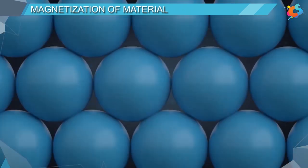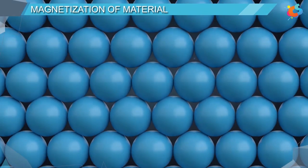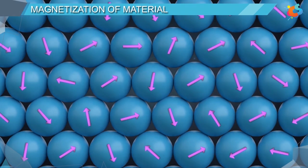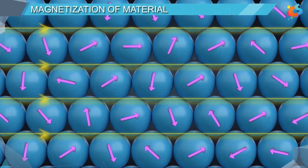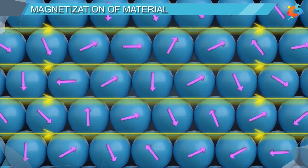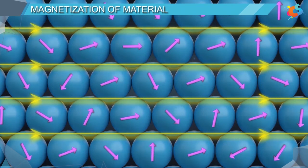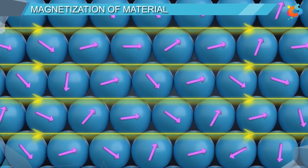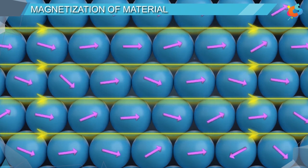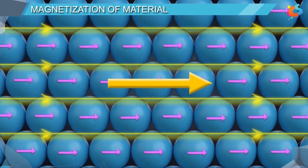Every material consists of more than one atom. Generally, the magnetic moments of these atoms are randomly oriented and the net dipole moment of the material is zero. However, when the material is placed in an external magnetic field, the magnetic moments of these atoms tend to align themselves to the magnetic field and develop a net magnetic moment.